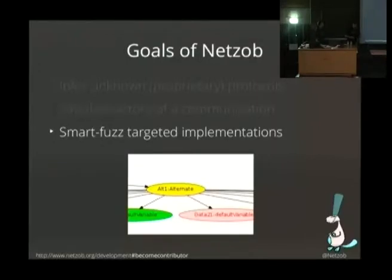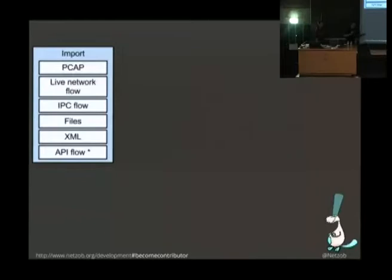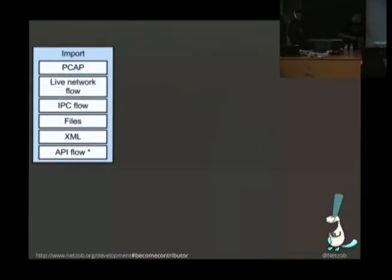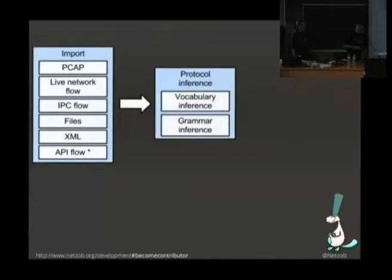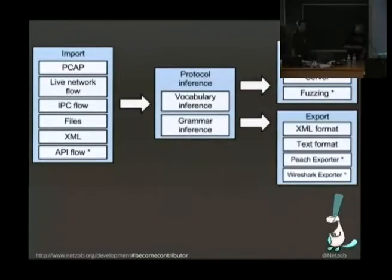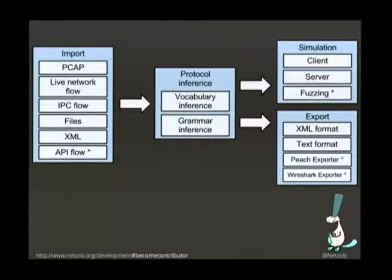Netzob is split into three main parts. The first one allows you to import data into Netzob—you can import pickups of course, you can also capture data from the network or from IPC communication flows. Once you have the data into Netzob, you can apply different algorithms provided. There are two sets of algorithms: the first one allows vocabulary inference to understand the meaning of the messages, and the second set provides grammatical inference so you can understand the state machine behind the protocol. Once you've understood the protocol, you can simulate it, play with it, or export to other tools.